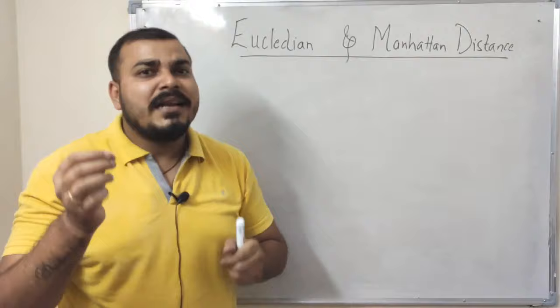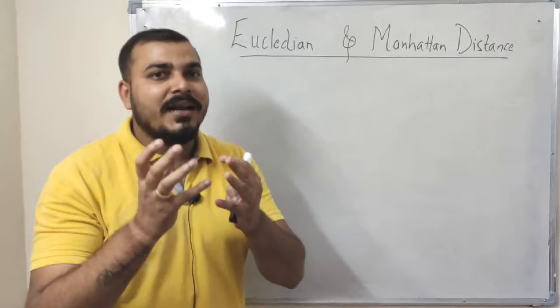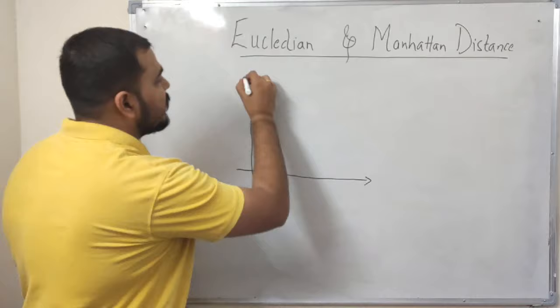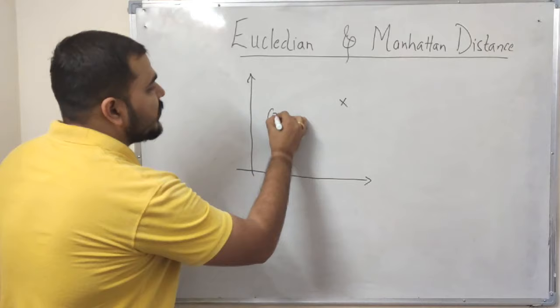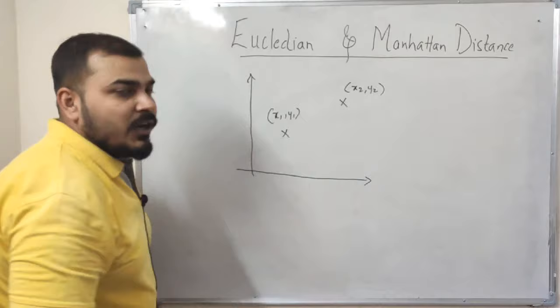So let us just go and discuss what exactly is Euclidean distance and Manhattan distance. Let me just show you a good example over here. Let me consider that I have one point over here and the other point over here. This point is basically represented by x1 comma y1, this point is basically represented as x2 comma y2. Now I've just drawn a two-dimensional graph, right? So this may be my x value, this may be my y value.